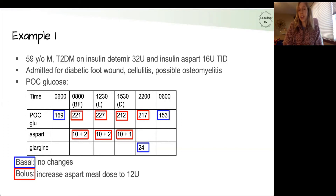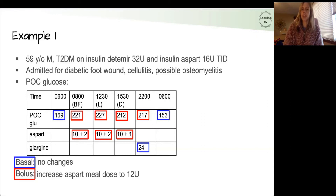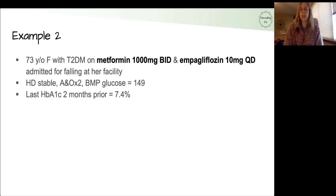You might go more conservative and make it 11 units if he's looking a little bit sicker. Based on your clinical judgment, you can lean on the side of more or less. Now let's go through another example.